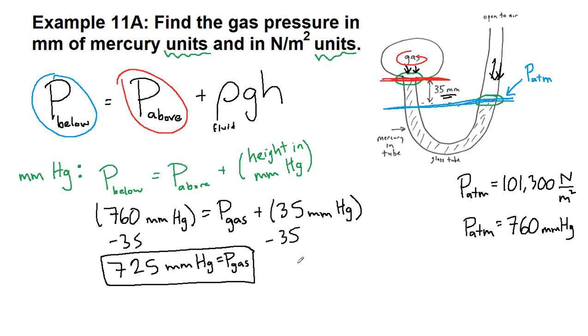And we get our answer is 725 millimeters of mercury. And that is our pressure of the gas. Now, that only works because we had mercury in the tube.